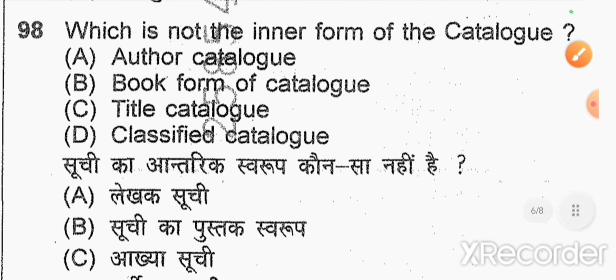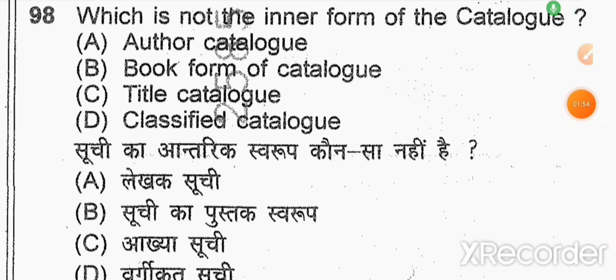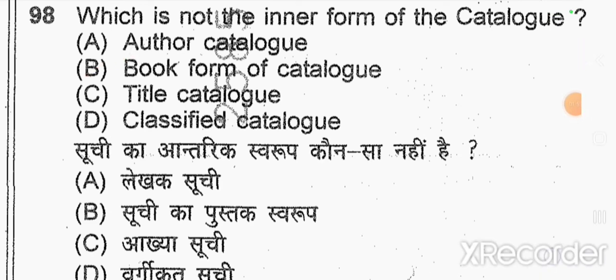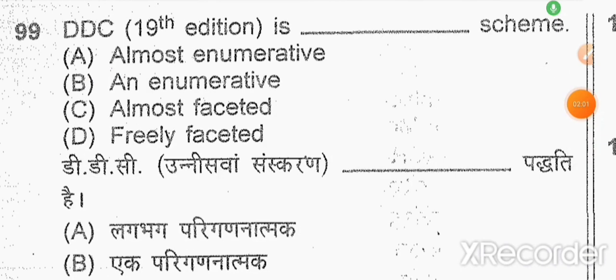Question number 98: which is not the inner form of catalog? The book form of catalog — option B. Question number 99: DDC 19th edition is almost enumerative — option E.